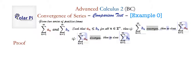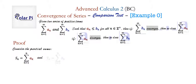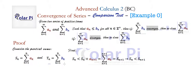Now let's get on with the proof. Let's consider partial sums — let's consider the nth partial sum for the series with a sub n, and call it s sub n. Then let's call the nth partial sum for the series with b sub n, t sub n. First, notice that the nth partial sum is less than the nth partial sum itself plus the next term, which is the n plus first partial sum. So in conclusion, the nth partial sum s sub n is less than the n plus first partial sum — remember, positive terms.